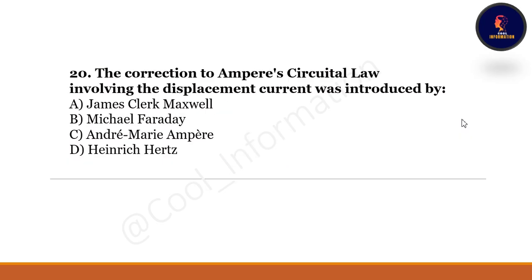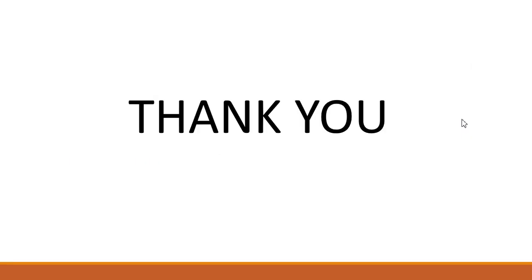The last question: the correction to Ampere's circuital law involving the displacement current was introduced by whom? Option A: James Clerk Maxwell. Option B: Michael Faraday. Option C: André-Marie Ampère. Option D: Heinrich Hertz. The correct option is A — James Clerk Maxwell. Thank you so much for watching. If you enjoyed the videos, please hit the like button and share these videos in every group.